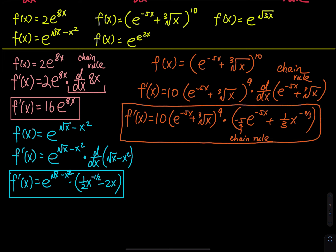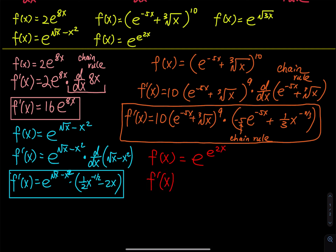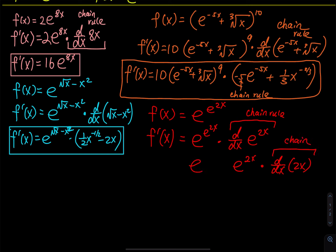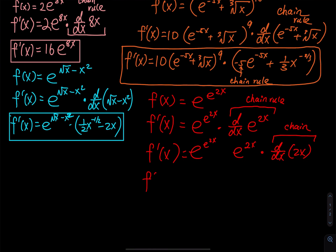The next problem is f(x) = e^(e^(2x)). Taking the derivative: the derivative of e^(anything) is e^(anything) times the derivative of the exponent. The exponent here is e^(2x), whose derivative is e^(2x) times 2 by chain rule. So f′(x) = 2·e^(e^(2x))·e^(2x). This requires applying the chain rule twice.